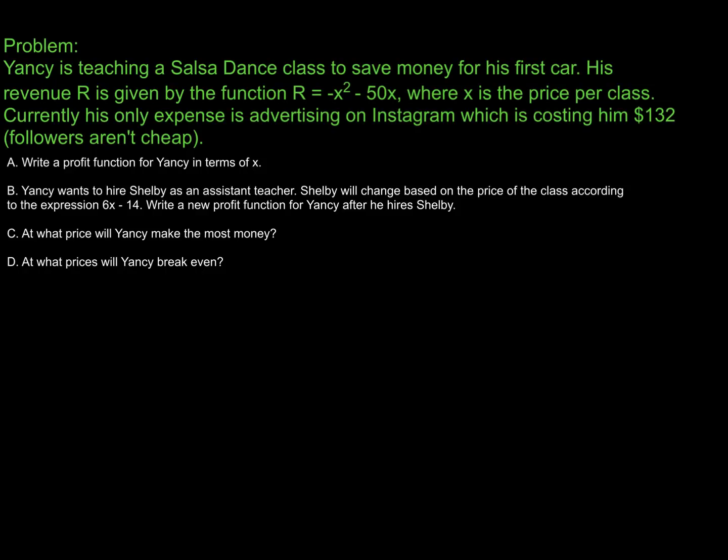All right, so here is a problem for us to try out. The problem goes as follows. Yancy is teaching a salsa dance class to save money for his first car. His revenue R is given by the function R equals negative X squared minus 50X, where X is the price per class. Currently, his only expense is advertising on Instagram, which is costing him $132. Apparently, followers aren't cheap.